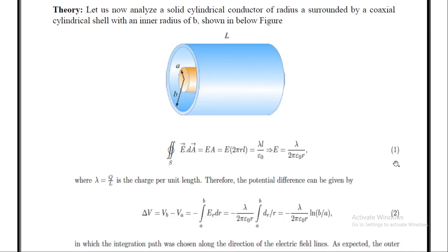Now let us see the theory of this coaxial cylindrical capacitor in order to get the formula for finding dielectric constant. Let us analyze the solid cylindrical conductor of radius A surrounded by a coaxial cylindrical shell with an inner radius of B and having a length or height L, as shown in the figure below.